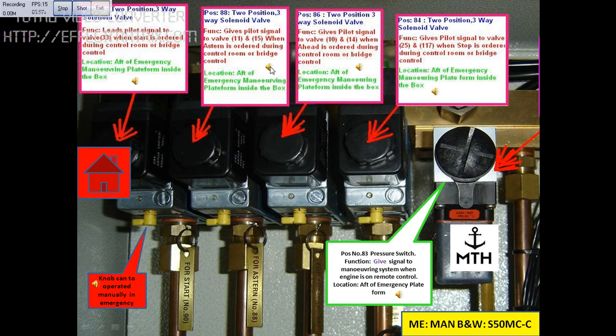This block is position number 88, which is a two position three-way solenoid valve. The function of this valve is to give a pilot signal to valve number 11 and valve number 15 when stern is ordered either from control room or from bridge control.